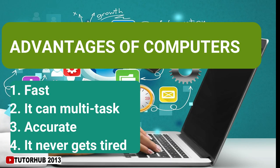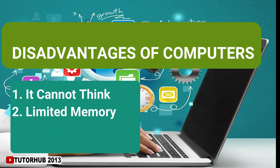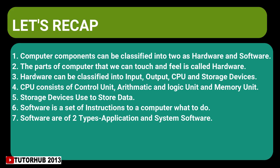Now let's discuss the advantages and disadvantages of a computer. Advantages: a computer is very fast, it can multitask — meaning it can do many tasks at the same time — it is accurate, it makes no mistakes provided the program is correct, it is reliable, and it never gets tired unlike humans. Disadvantages: a computer cannot think on its own and only works according to the program or instruction given. Also, though a computer can store an enormous amount of data, the memory has limitations.